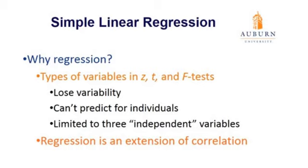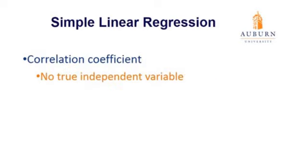Once we have a correlation coefficient between our variables, we can do a few more calculations and perform a regression analysis. You may remember that a correlation coefficient looks at the relationship between two variables, and we know those two variables are not causally related. We can't say one variable causes the other because we don't have random assignment to conditions — we can just state that they're related.